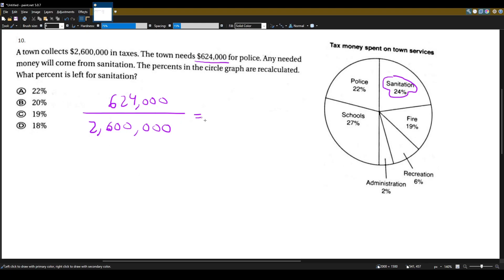So I'll go ahead and use my calculator. Let's actually simplify this first. We can cancel out these three zeros with these three zeros. And we'll get 624 divided by 2,600. And now we can put that in the calculator: 624 divided by 2,600, which equals 0.24.